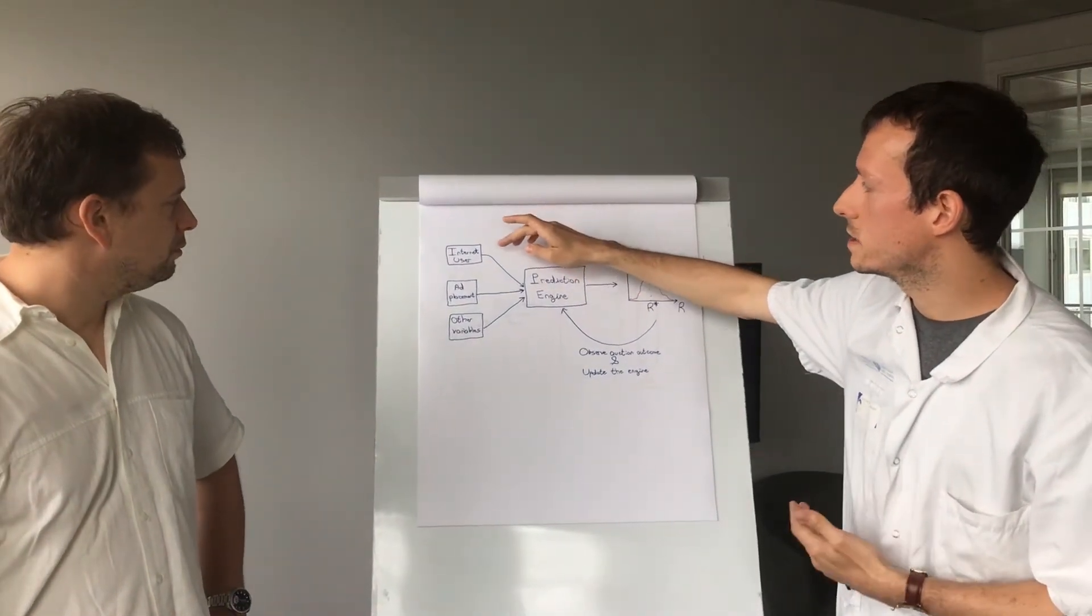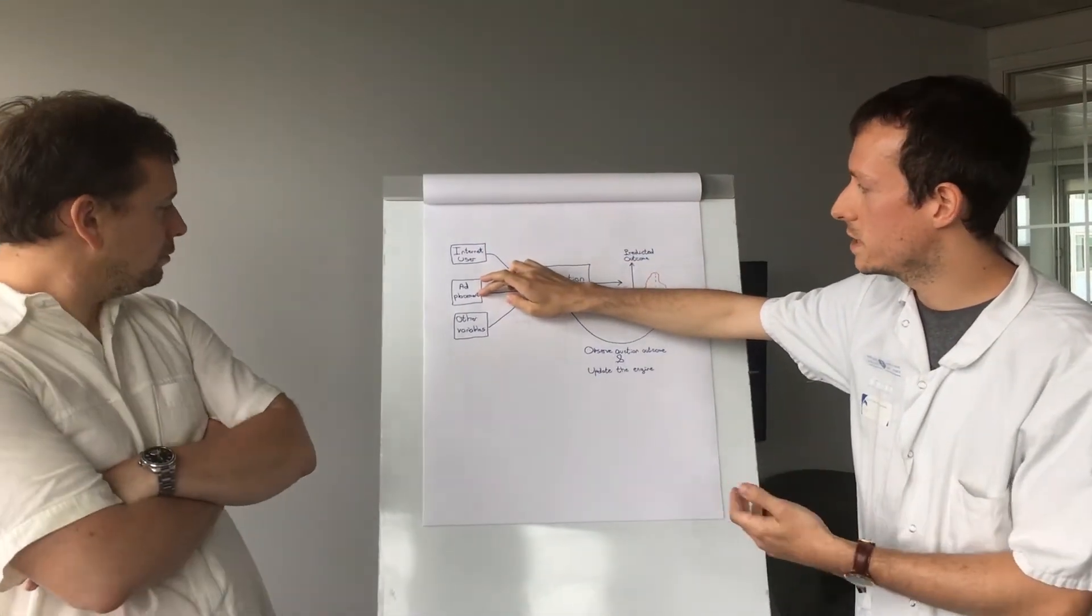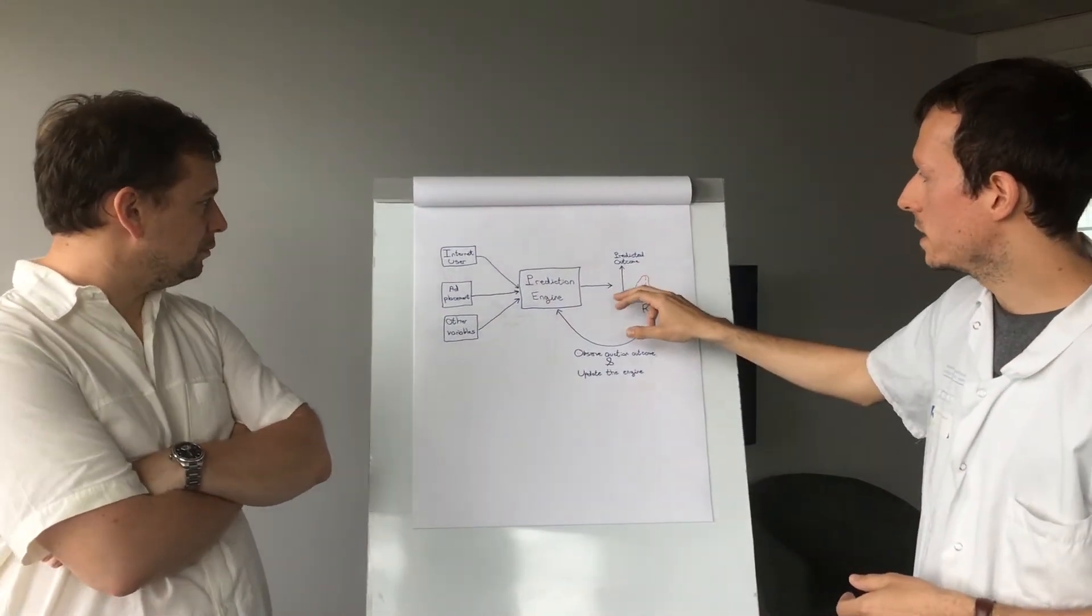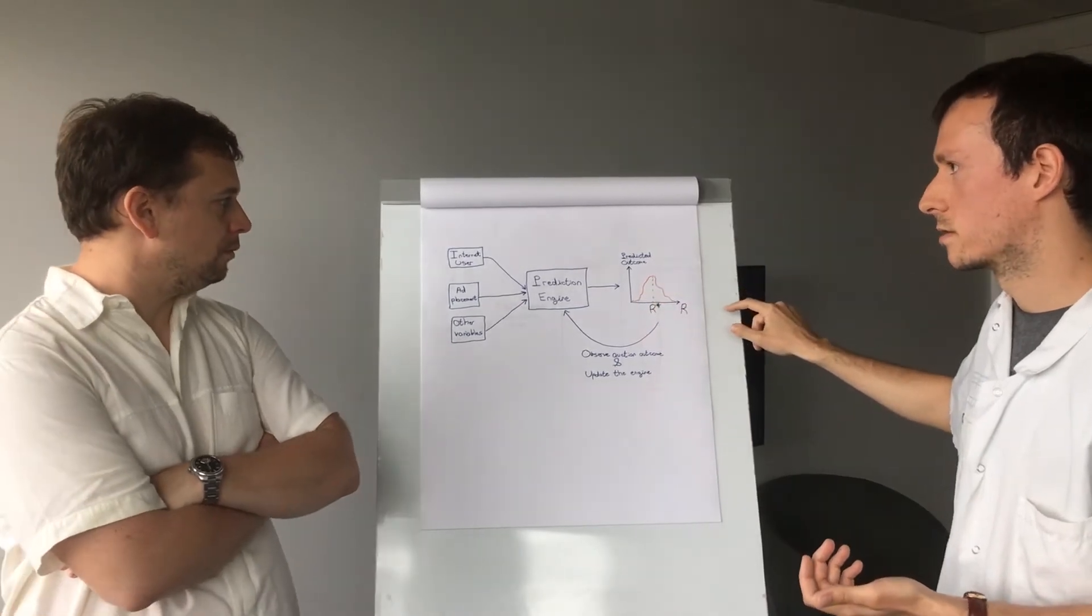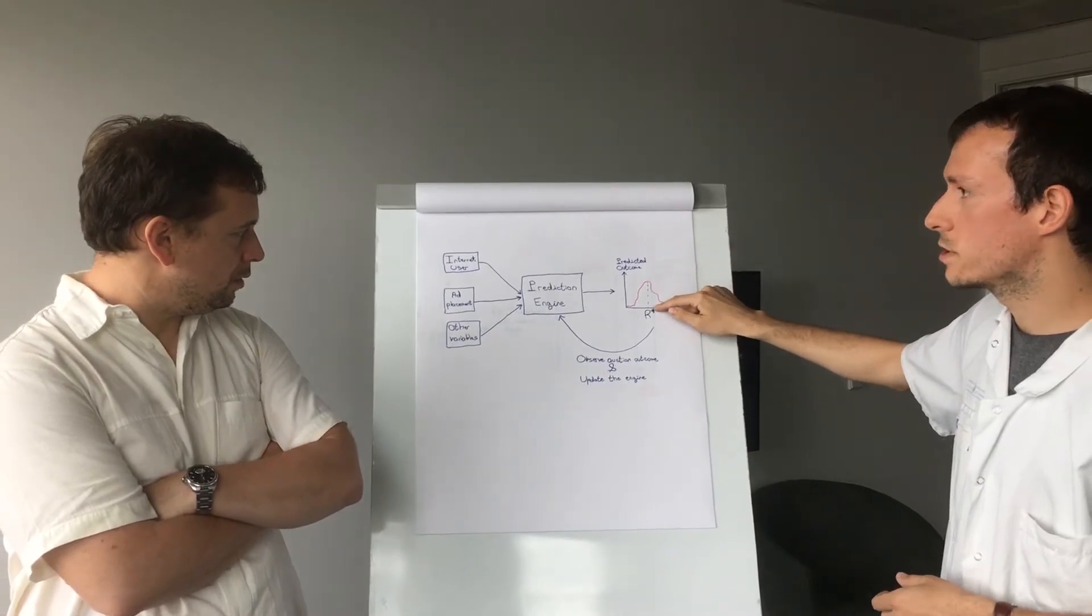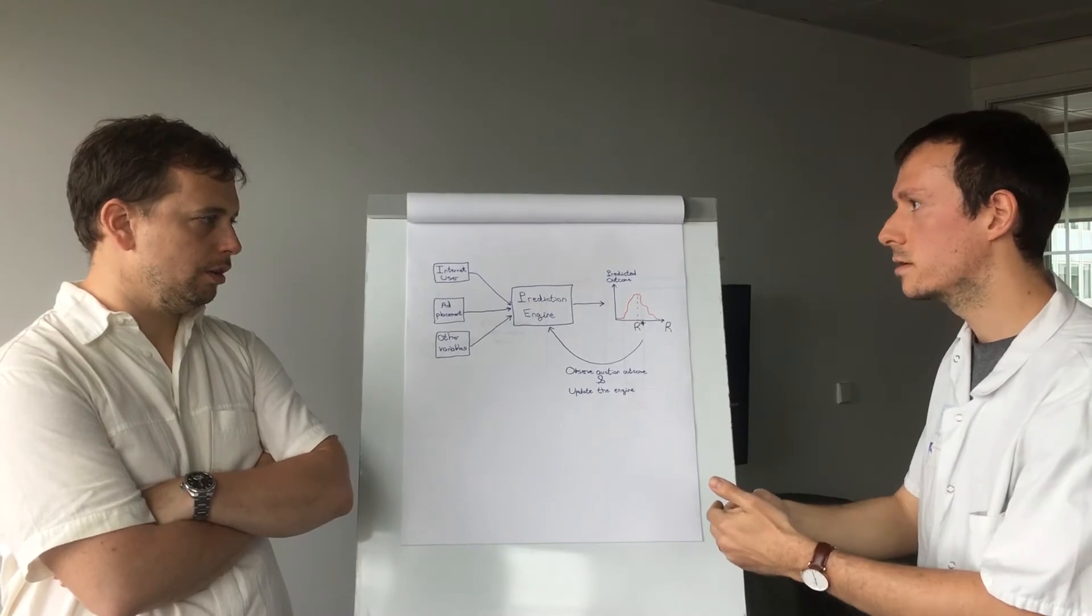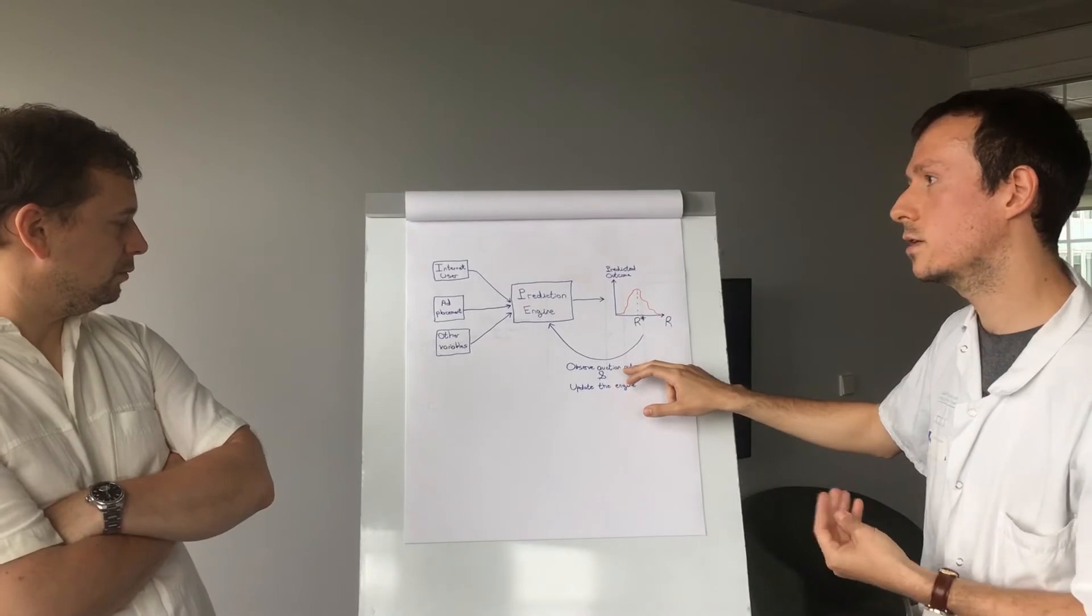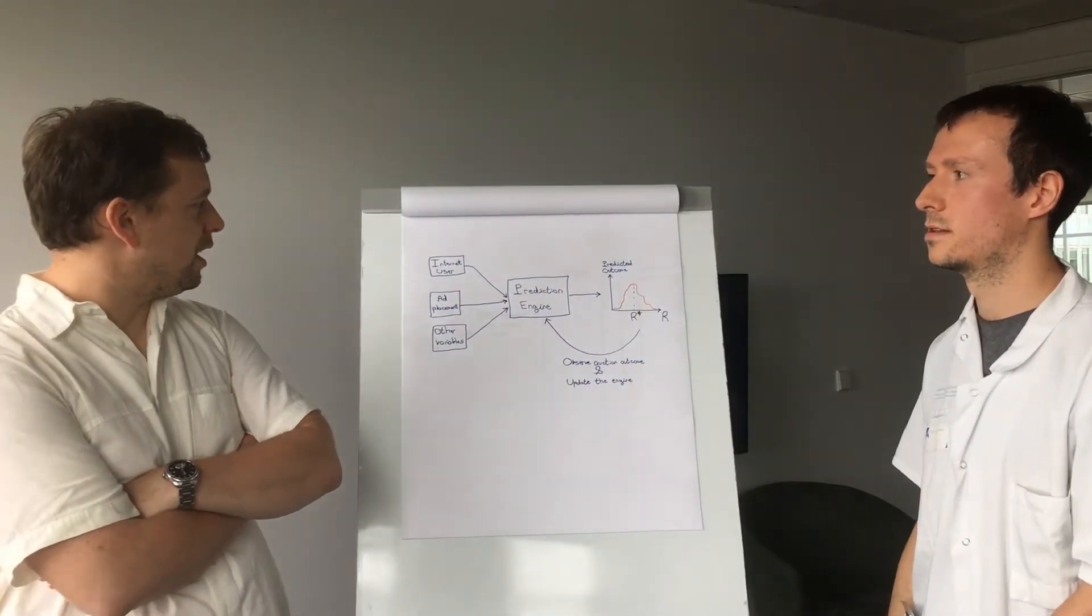So, the engine uses in each auction, identifiers of the internet user, identifiers of the ad placement, and possibly other variables you may have, and predicts for each auction, an estimate of the outcome function. For each reserve price, yeah. Exactly. Then, the optimal reserve price maximizing your payoff will be predicted and set into the auction. And then, once the auction has happened, we will use the observed outcome to update our prediction engine in real time. In real time, yeah. That's great.